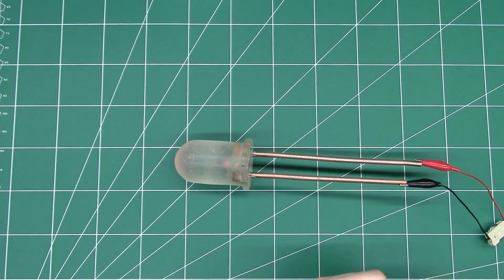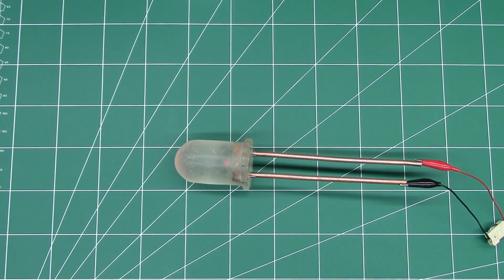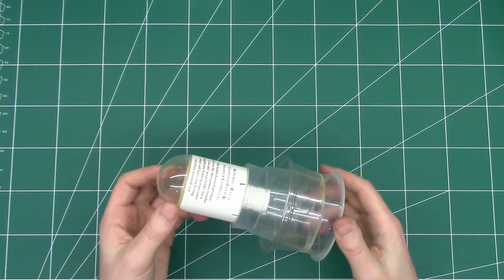But our 3D printer wasn't working at the time. So I had to kind of go a bit old school and try and model up the LED myself. So what I had done is I had made up this form here.